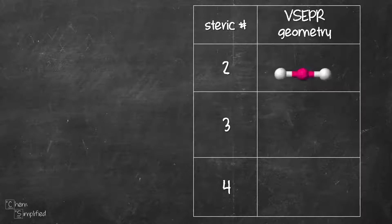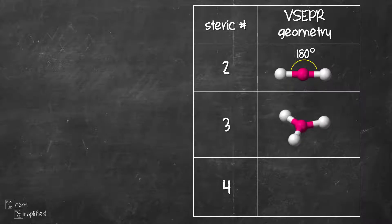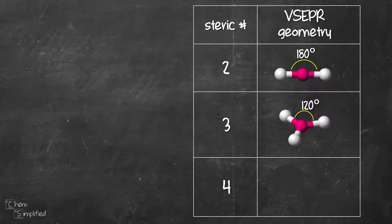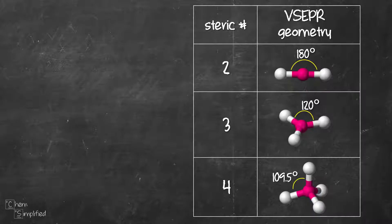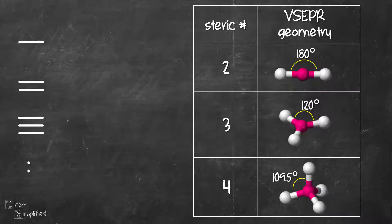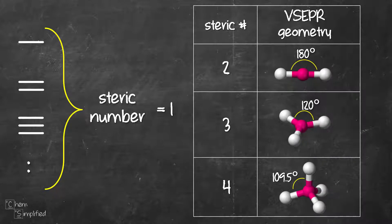Structure with steric number 2 will have two groups connected to the central atom. The central atom is in pink and surrounded by two groups at 180 degrees. Structure with steric number 3 will have three groups connected to the central atom, spaced at 120 degrees on the same plane. Structures with steric number 4 will have four groups connected to the central atom at 109.5 degrees. Steric number is basically an atom connected to the central atom through a single, double, or triple bond. If there's a lone pair on the central atom, that's counted as steric number 1 as well.